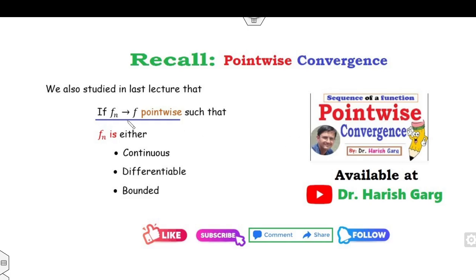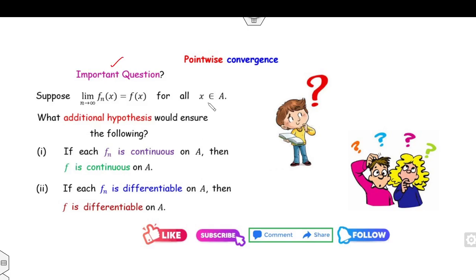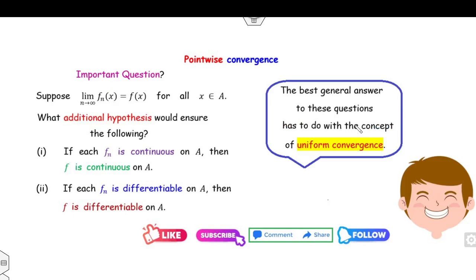In our last lectures we learned that if the sequence converges pointwise and fn is continuous, differentiable, or bounded, then f may or may not share the same property — these properties may not always be preserved in the case of pointwise convergence. So the important question is: what additional assumptions guarantee that f inherits these properties? The best answer is uniform convergence.